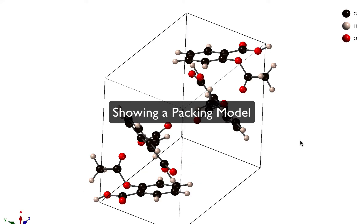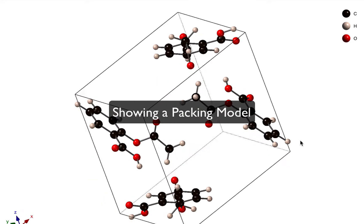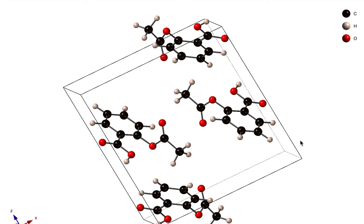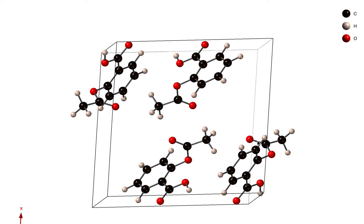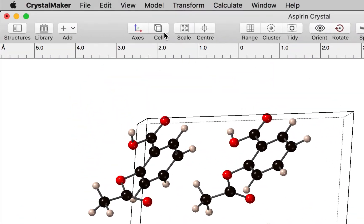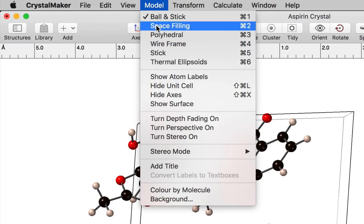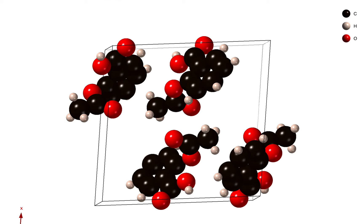One thing you might want to just do is maybe change the display from this basic ball and stick mode to some kind of packing model. CrystalMaker comes with some preset model types, so we can switch to a space filling model. Now these are using our covalent radii.